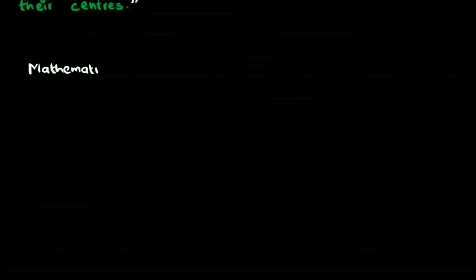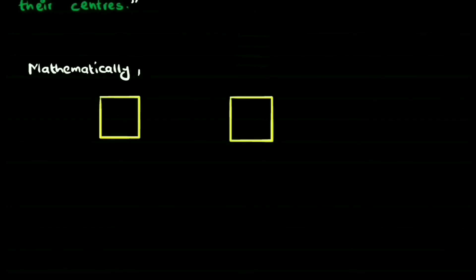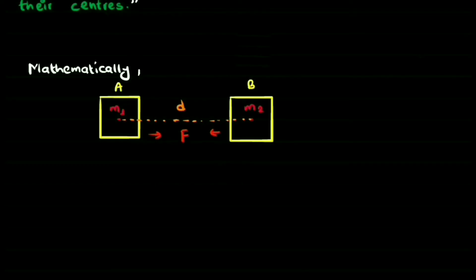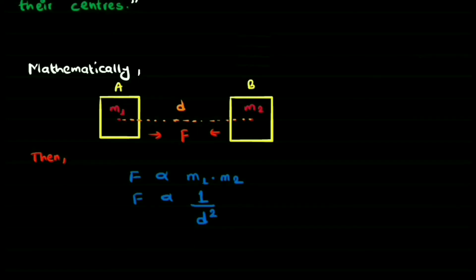We can also look at it mathematically. If we have to write it mathematically, we can assume there are two bodies A and B having masses M1 and M2, and let's say the distance is R. Now if the gravitational force between them is F, we can write that force is directly proportional to the product of masses. And force is inversely proportional to the square of distance between the centers.